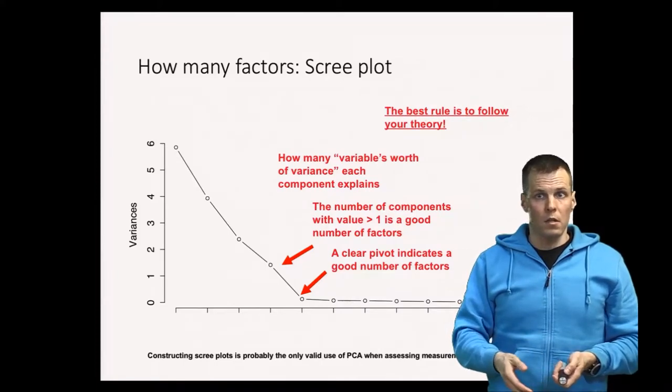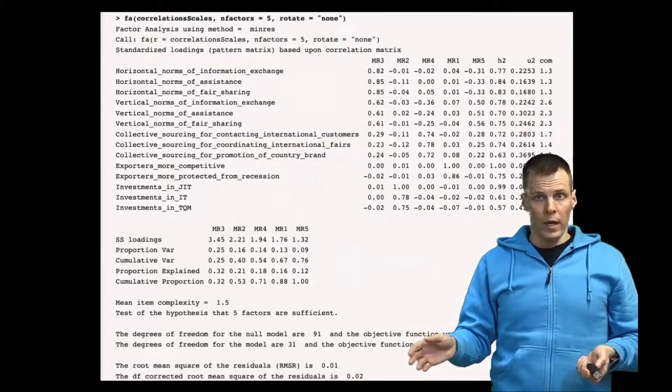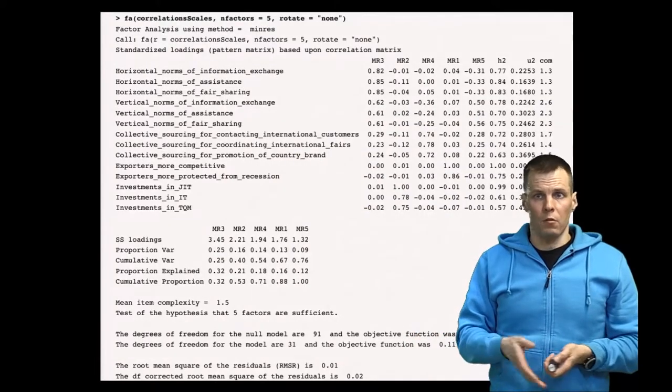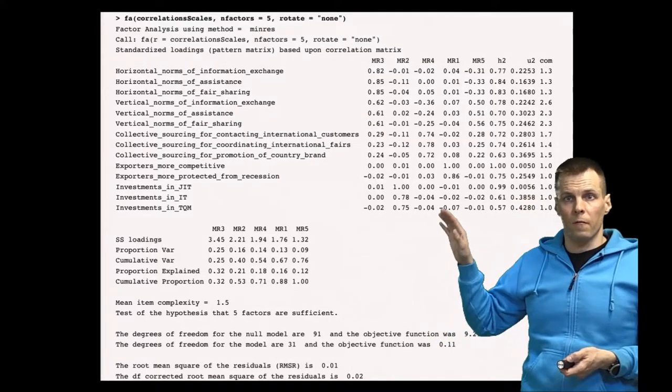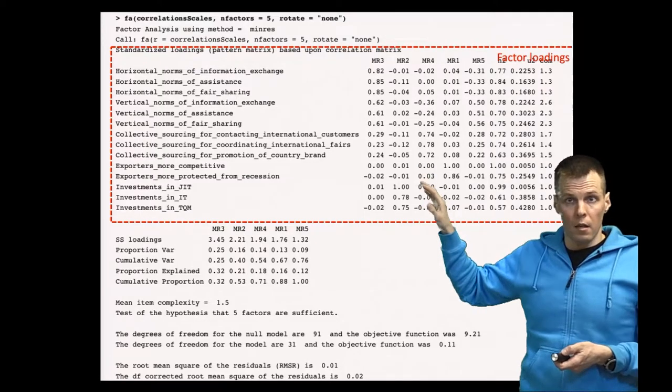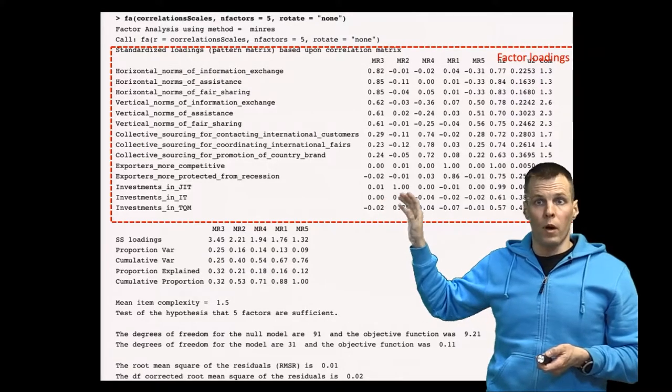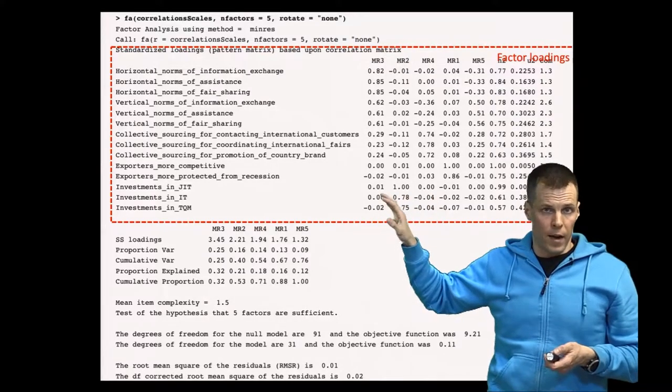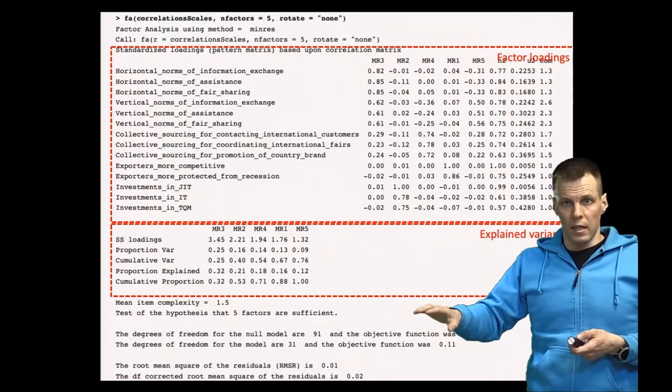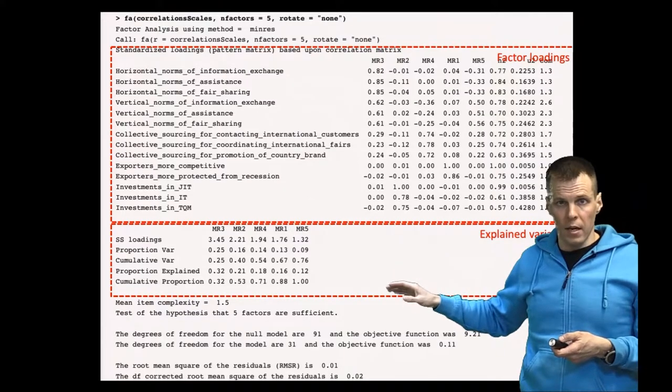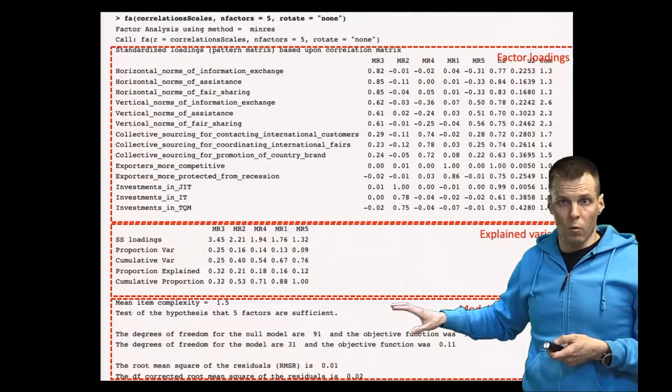So we apply factor analysis, requesting five factors using these 14 indicators, and we get a result printout from R. So what does the printout tell us? There are three different sections. The first section is the factor loadings—these statistics tell how strongly the indicators are related to each factor and how much uniqueness there is in the indicators that the factors don't explain. The second section is the variance explained—how much each factor explains the variation. And finally, in the bottom section we have different model quality indices.